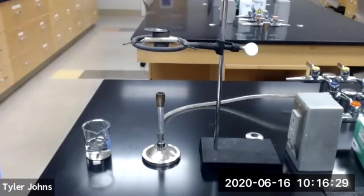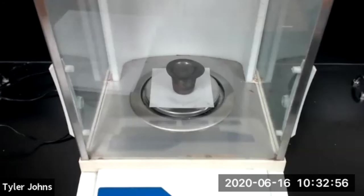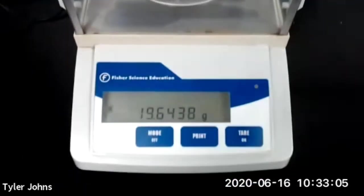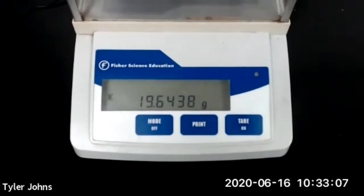So the constant mass of our crucible, crucible cover, and the anhydrous magnesium sulfate is 19.6438 grams.